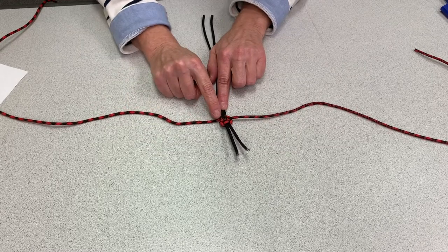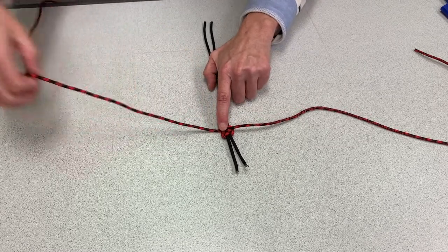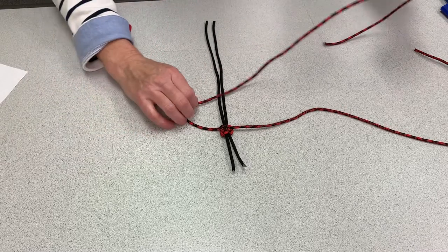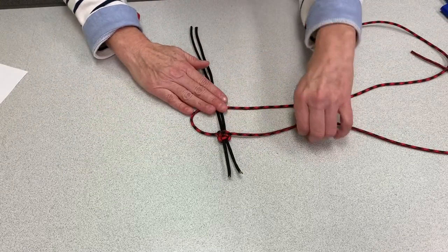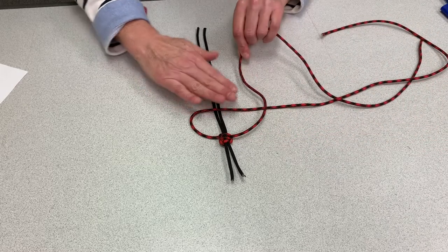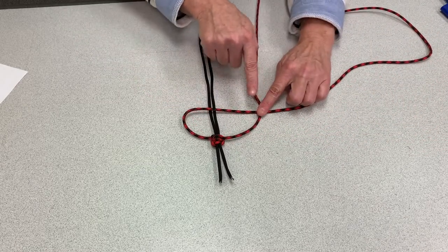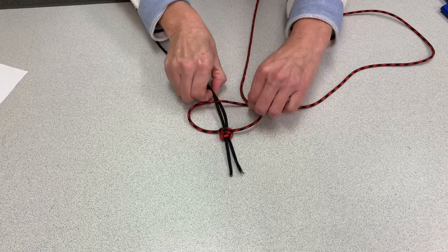So now I see my knot is on this side. So I'm going to take this cord, bring it over the black. The colored cord on this side, I bring down over it. And now I'm going to go underneath again.